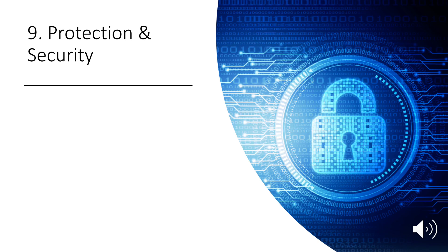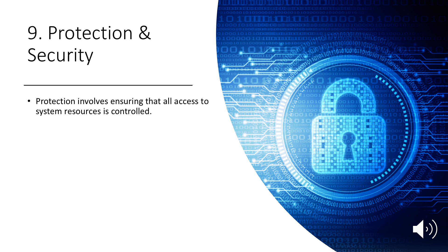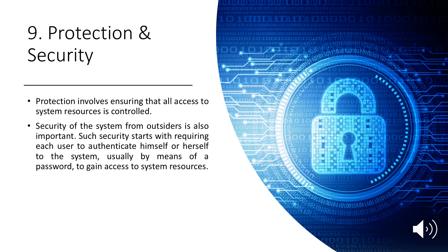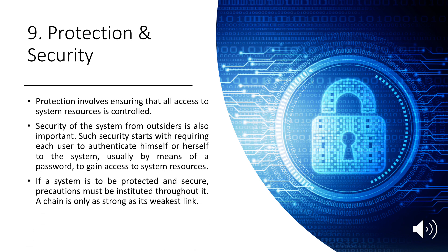Protection and security: The owners of information stored in a multi-user or networked computer system may want to control use of that information. Protection involves ensuring that all access to system resources is controlled. Security of the system from outsiders is also important. Such security starts with requiring each user to authenticate himself or herself to the system, usually by means of a password. If a system is to be protected and secure, precautions must be instituted throughout it — a chain is only as strong as its weakest link.